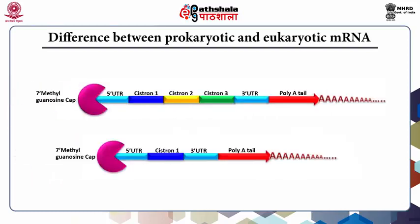This picture shows the difference between prokaryotic and eukaryotic mRNA. In both cases you will find a 7-methylguanosine cap, a 5-prime UTR, cistrons 1, 2, and 3, and then a 3-prime UTR in case of prokaryotic mRNA, followed by a poly-A tail.